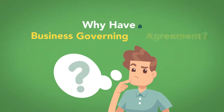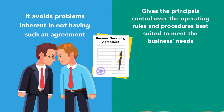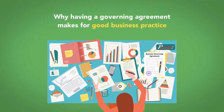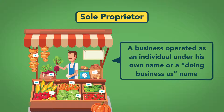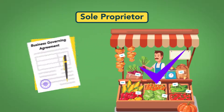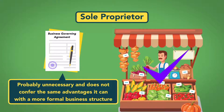Why have a business governing agreement? Having a business governing agreement benefits a company in two related ways: it avoids problems inherent in not having such an agreement, and gives the principals control over the operating rules and procedures best suited to meet the business's needs. In the case of a sole proprietor—a business operated as an individual under his own name or a doing-business-as name—having a governing agreement is probably unnecessary and does not confer the same advantages it can with more formal business structures.